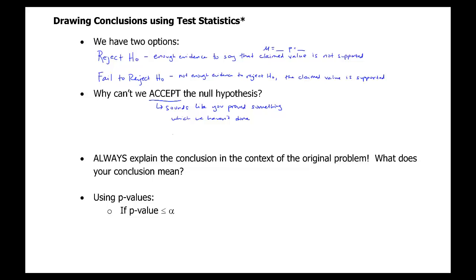If the evidence supports the null hypothesis, we say we haven't disproved it — the evidence supports the null hypothesis. So if the evidence supports the null hypothesis, that is fail to reject the null hypothesis. If it does not support, that would be a conclusion to reject the null hypothesis.